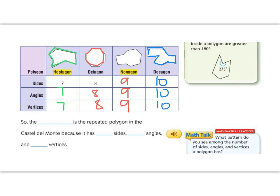Now thinking back to that picture of the castle, we saw that the shape inside the middle, and then it was repeated on the outside, had eight sides, angles, and vertices. The shape that has eight sides, angles, and vertices is the octagon. So the octagon is the repeated polygon in the castle del monte, because it has eight sides, eight angles, and eight vertices. Great job so far, fifth graders. Let's keep going.